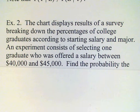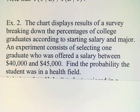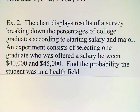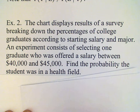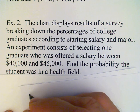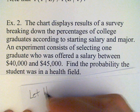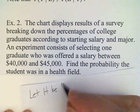Our experiment consists of choosing one graduate at random in the salary category forty to forty-five thousand dollars, and we want to find the probability that the student was in a health field. This is a conditional probability. We want the conditional probability that the student is in a health field — let H be 'student in health field.'